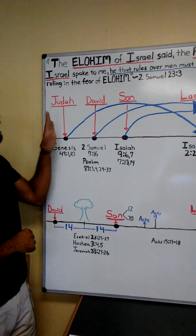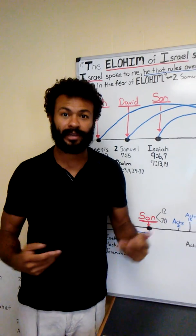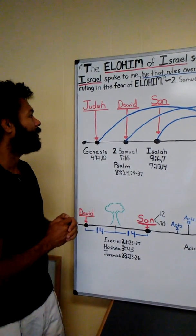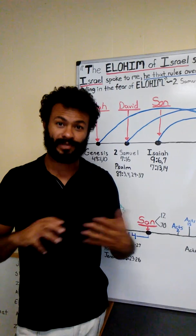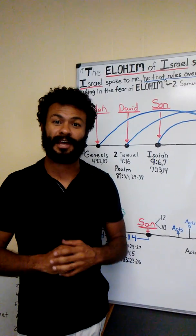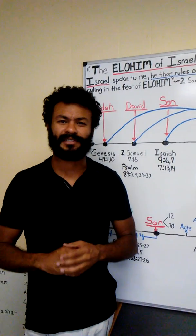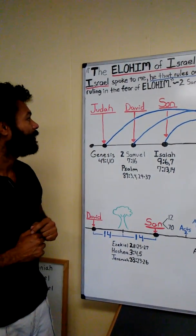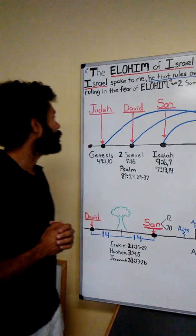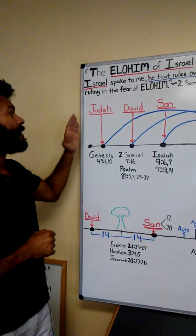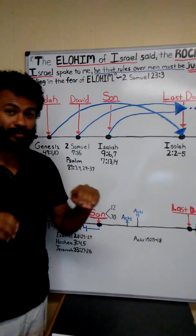Until that happens, until Shiloh comes, the scepter shall not depart from Yehudah, nor a lawgiver between his feet, which means his offspring will always be people that are ruling lawgivers throughout the tribe of Yehudah. In Yehudah's life, when the cup was found in Benjamin's sack, he was willing to step in and take the punishment for his brother so his father would not have to bear another loss of a son. This picture of Yehudah's leadership is profound when it comes to the king—it should be a righteous king, someone willing to serve in the fear of Elohim.